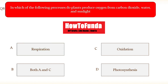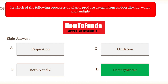Question number eight: in which of the following processes do plants produce oxygen from carbon dioxide, water, and sunlight? Option A respiration, option B both A and C, option C oxidation, option D photosynthesis. The right answer is photosynthesis — using photosynthesis, plants produce oxygen from carbon dioxide, water, and sunlight.